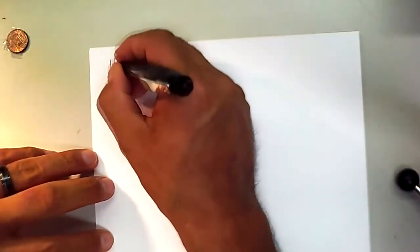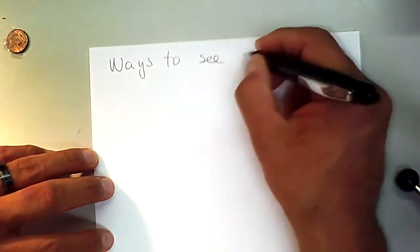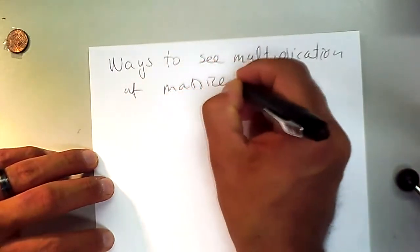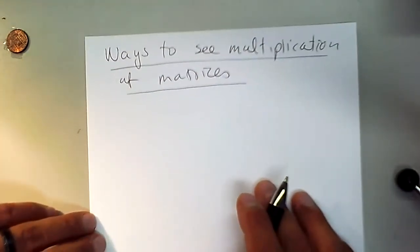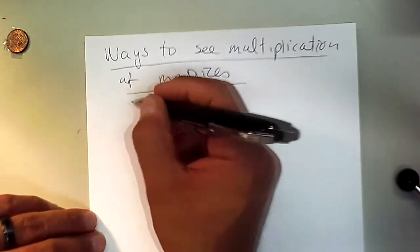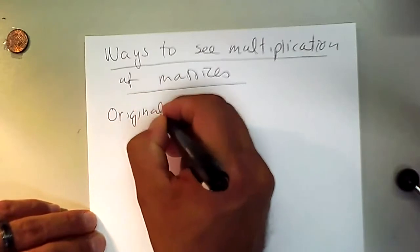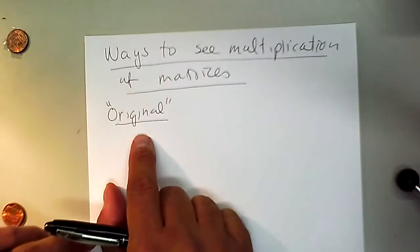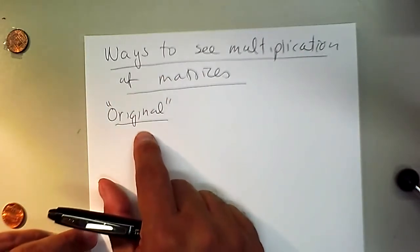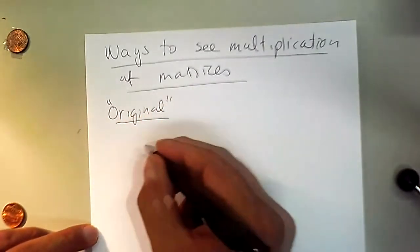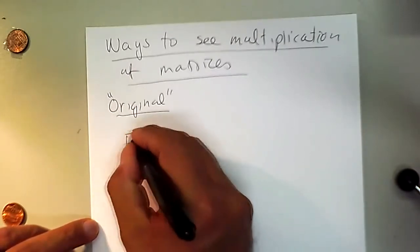Now let's talk about different ways to look at multiplication of matrices. There are several ways to see matrix multiplication. I'll call the first one the 'original' way — that's just the name I'm giving it; it's not a universal term. It's the way I've always done it from the beginning.